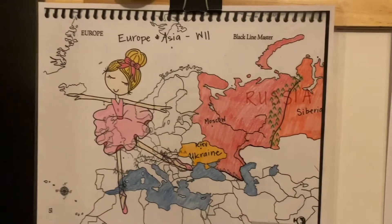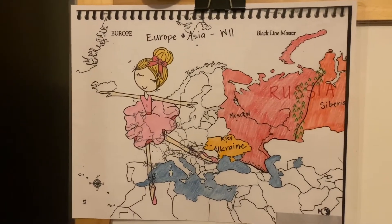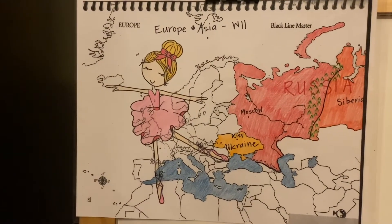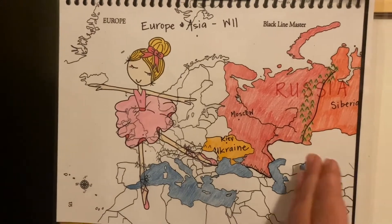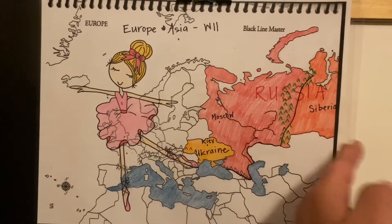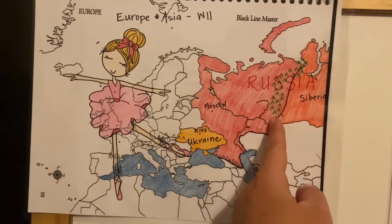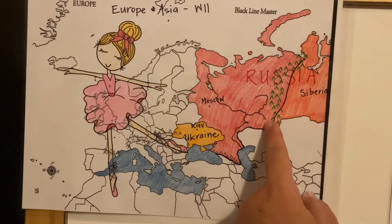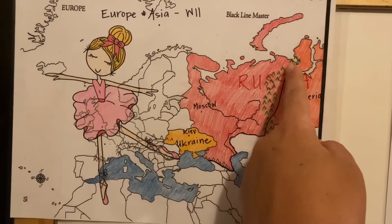Let's sing our song one more time! Europe and Asia divide Russia, and the Ural Mountains act as the border.